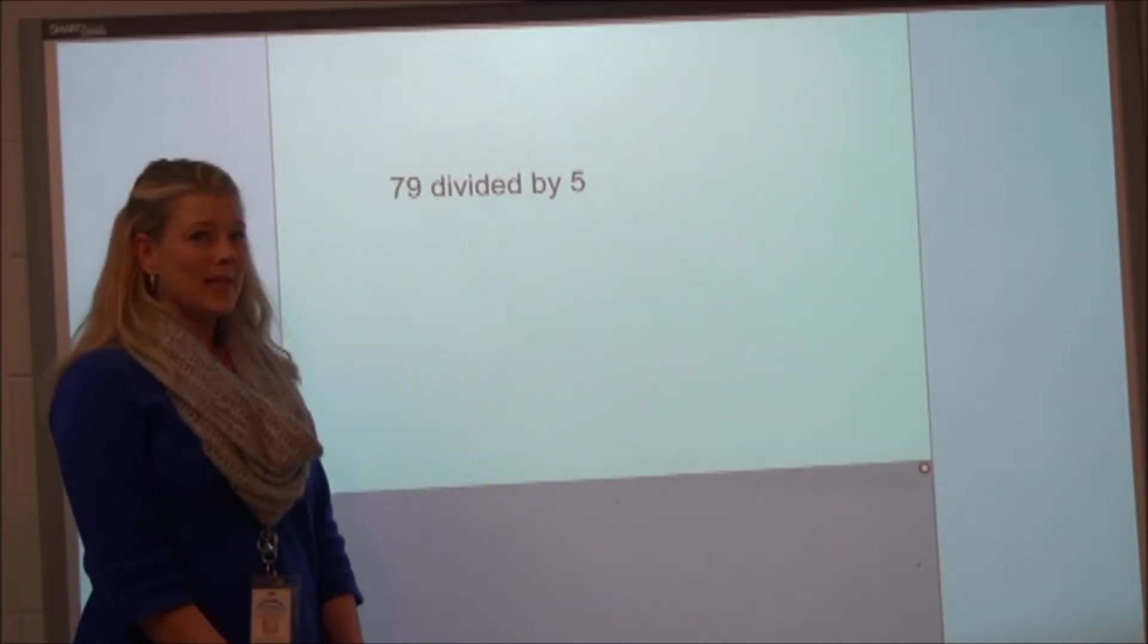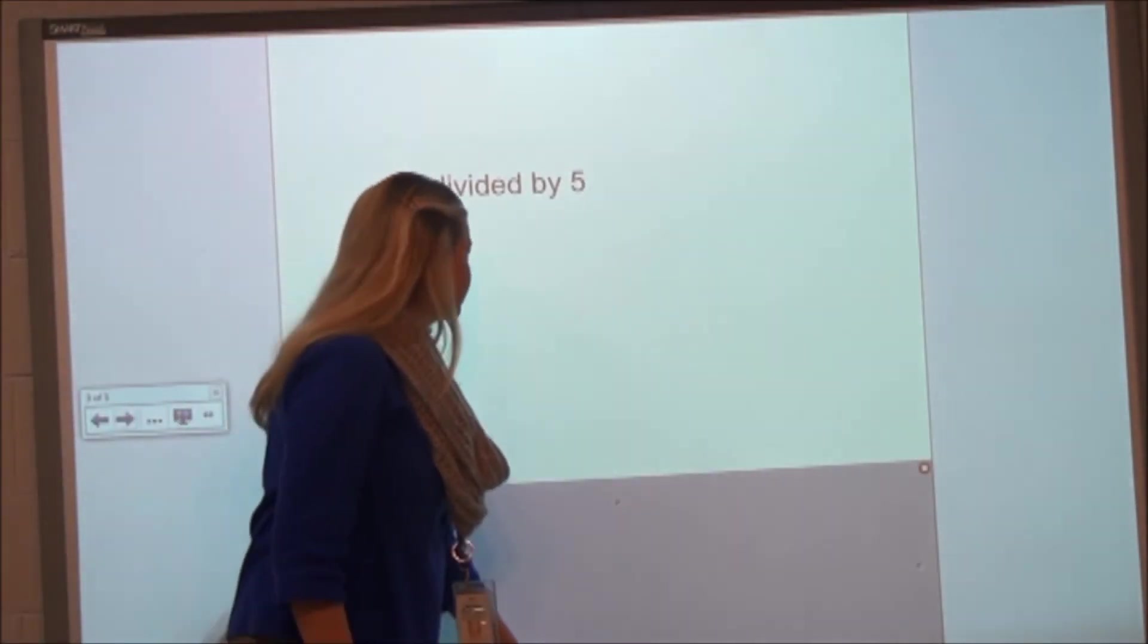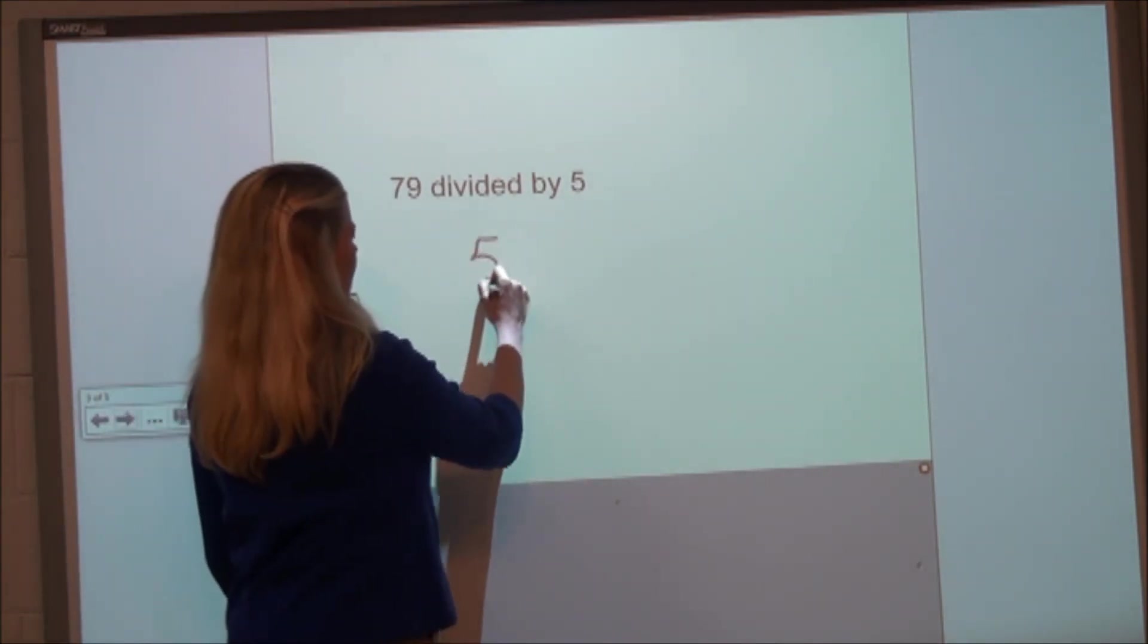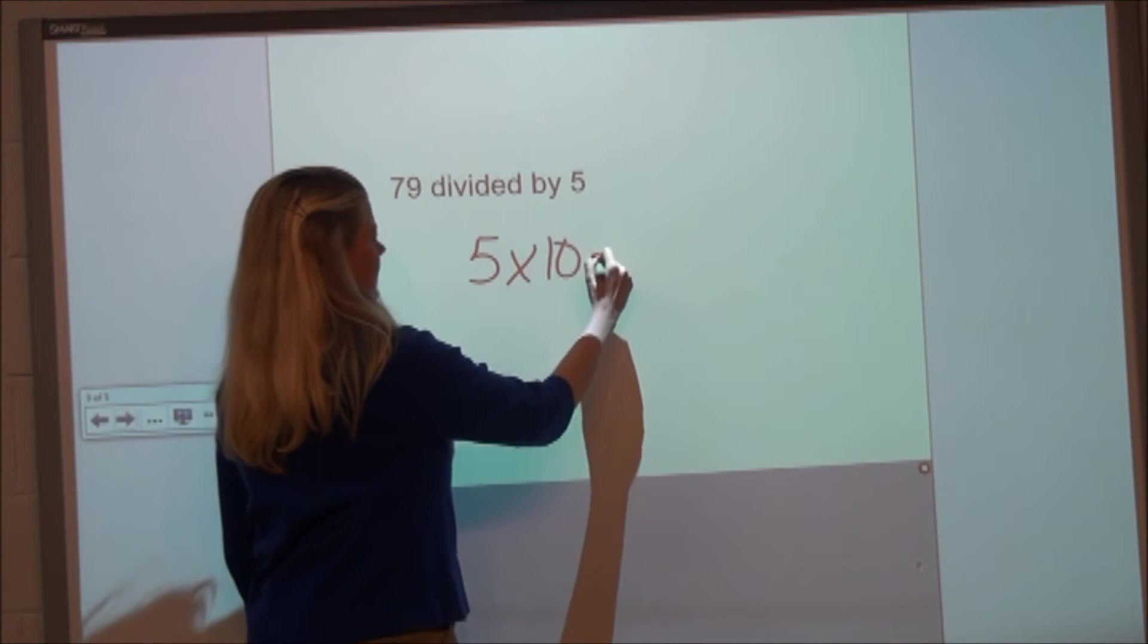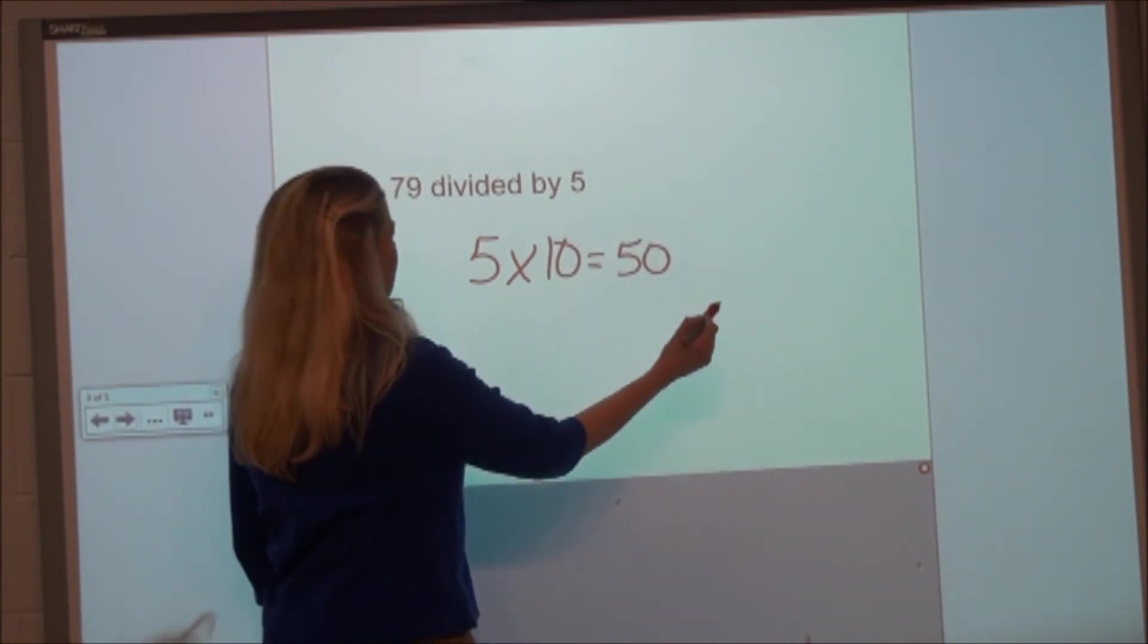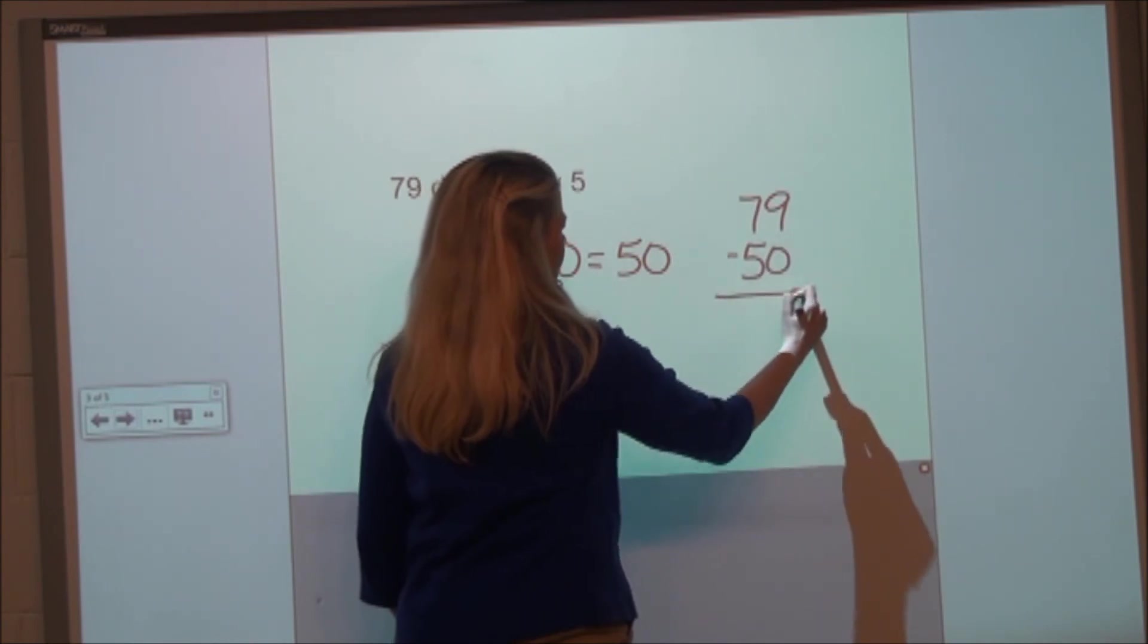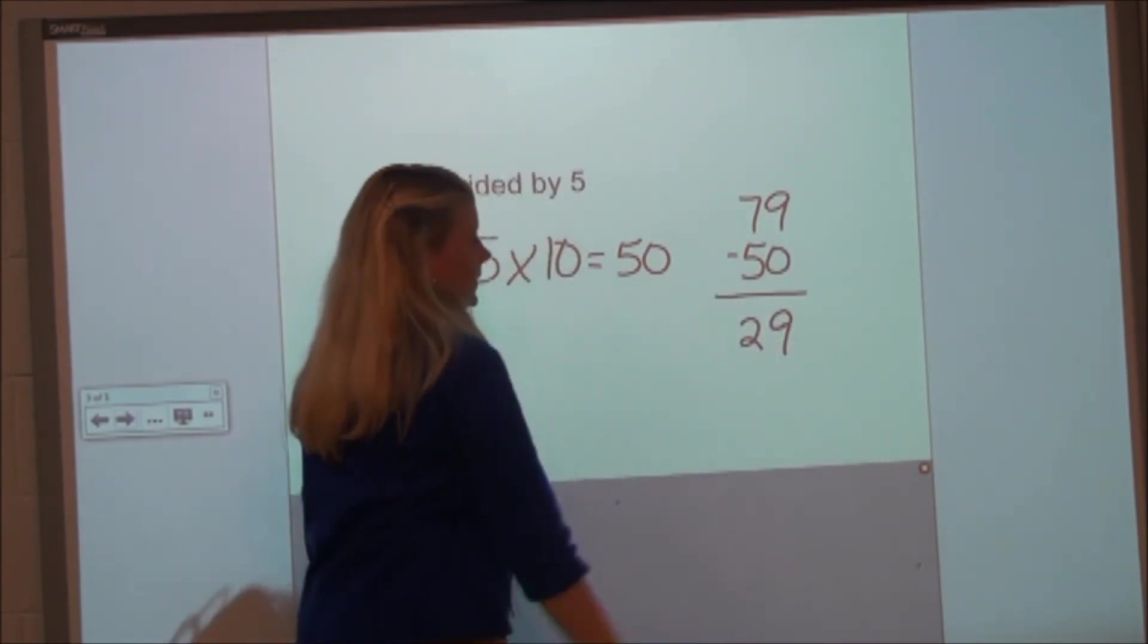Let's do one more example of multiplying up. It's 79 divided by 5. Well, I know easily that 5 times 10 equals 50. I'm going to take that 50 away from my dividend of 79, and I have 29 left.